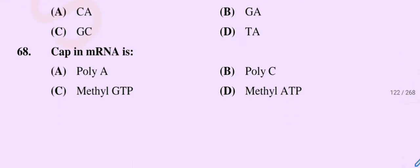Question number 68: Cap in messenger RNA is — Option A: poly A, Option B: poly C, Option C: methyl GTP, Option D: methyl ATP. So the correct option is Option C, methyl GTP.